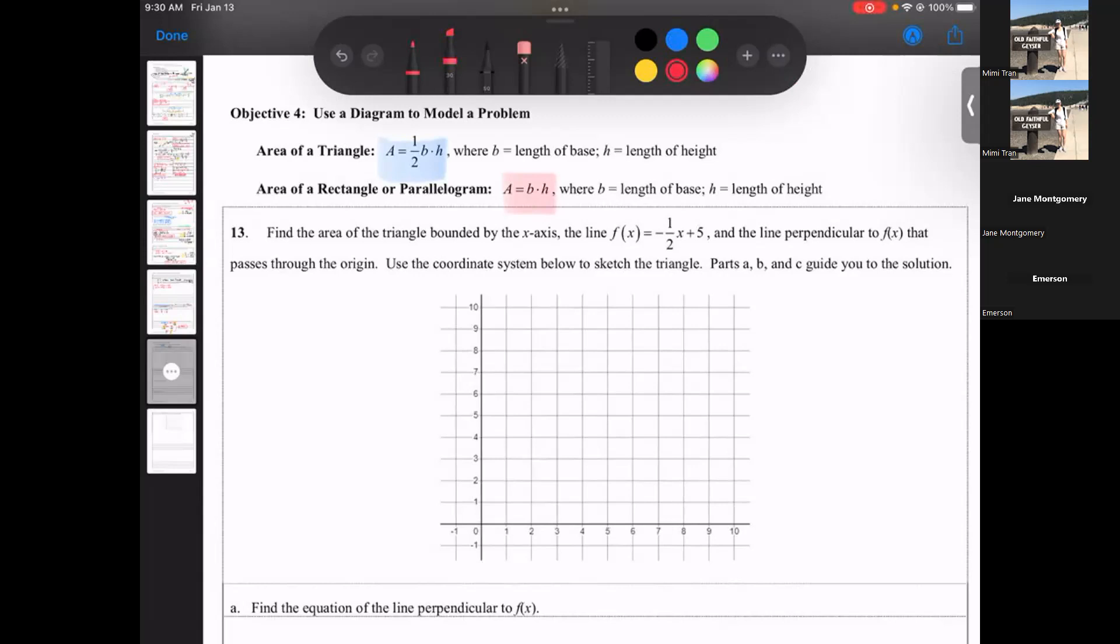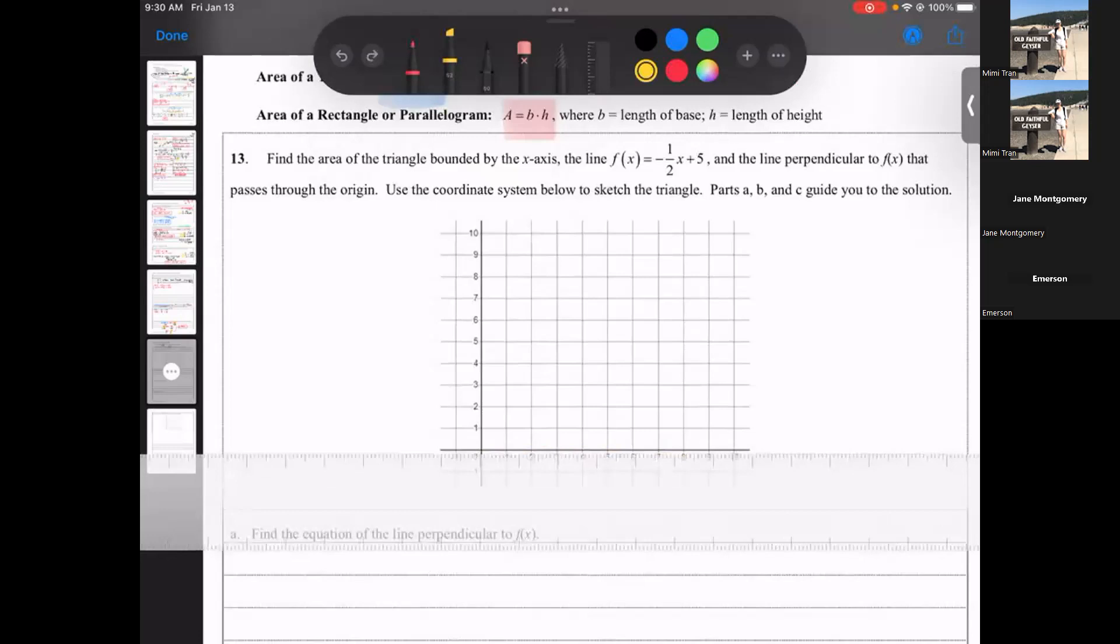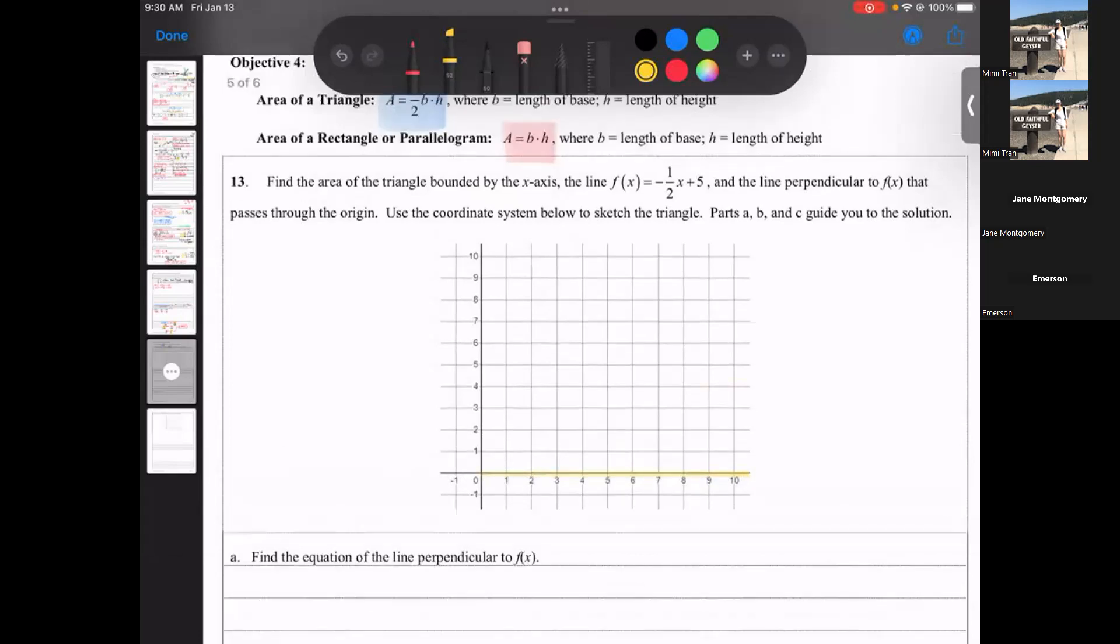So let's practice number 13. They want you to find a triangle that is bounded by the x-axis. So the x-axis is this one, that's your x-axis. We'll use the rulers and make it straighter. And what else? It's bounded by the line f of x equals negative one half x plus five. I'm gonna use rise over run to graph this one. So number five is the y intercept, right. So that's when x equals zero, y is five.